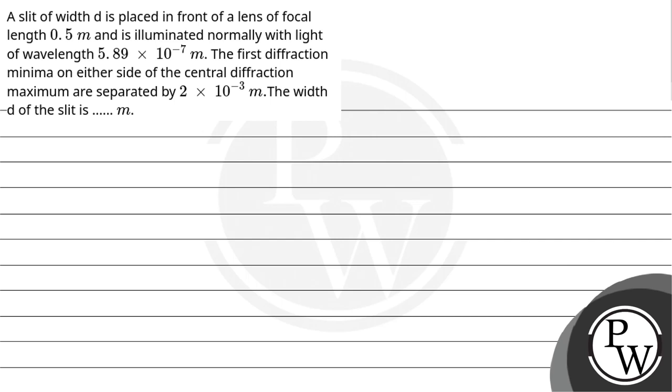Let's read the question. A slit of width D is placed in front of a lens of focal length 0.5 meter and is illuminated normally with light of wavelength 5.89 × 10^-7 meter.